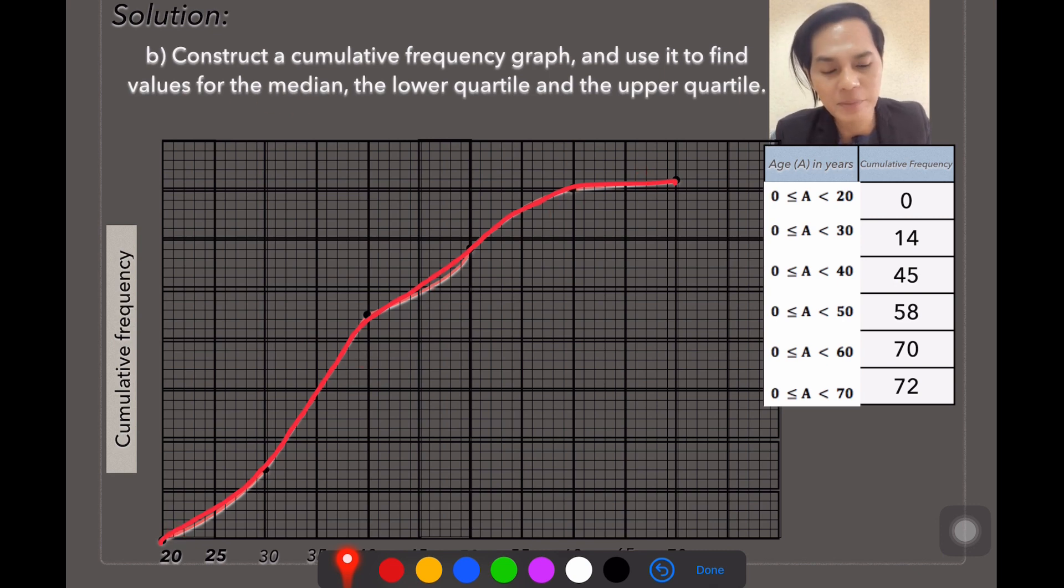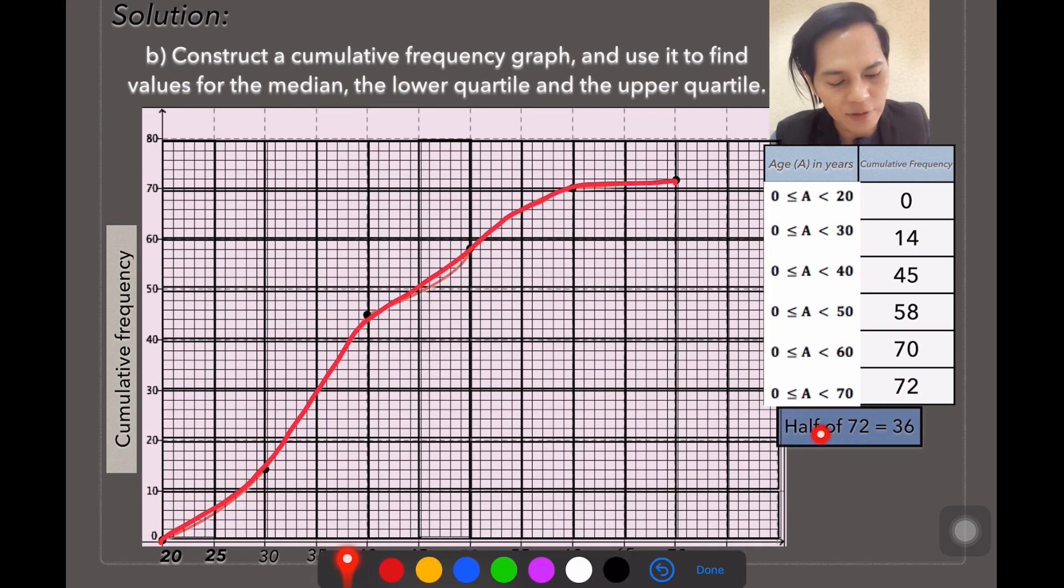First, remember that the median is the middle number. So just look at the total number of frequency, which is 72. Half of 72 is 36. So just look at 36 here.